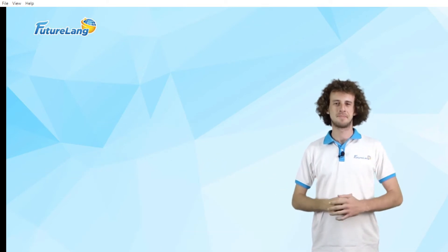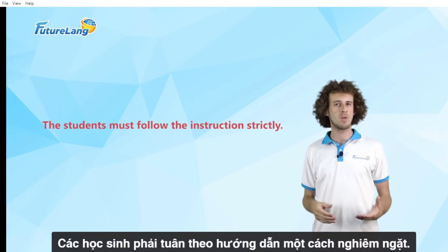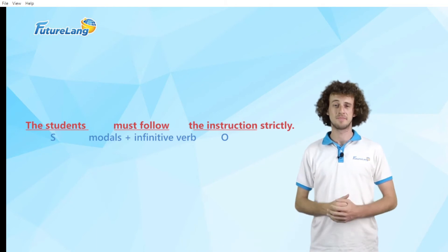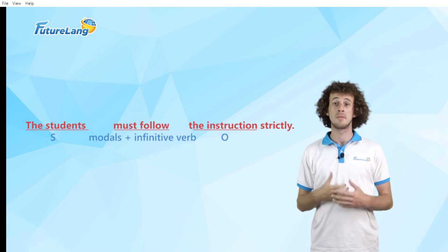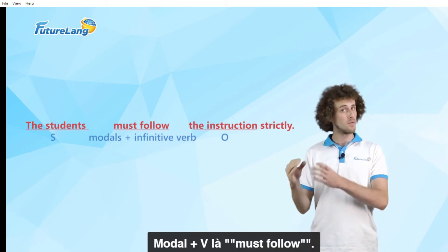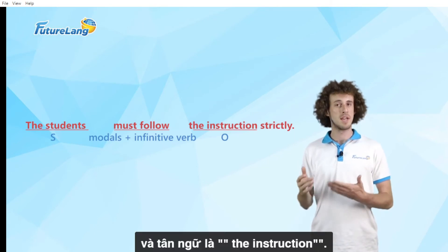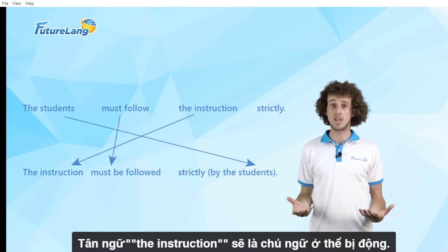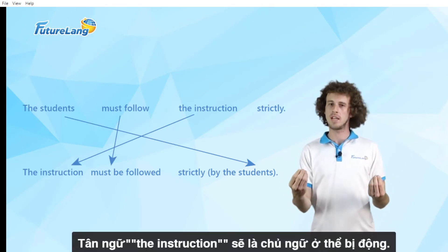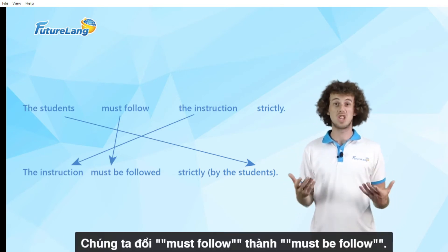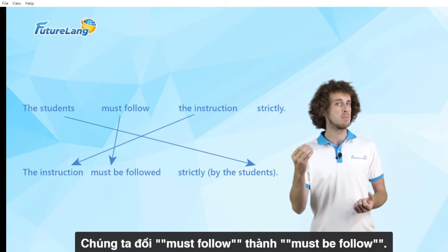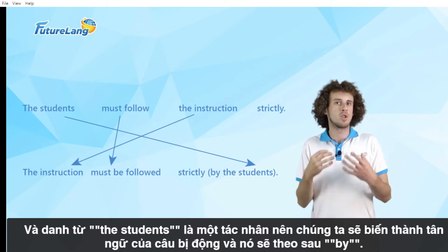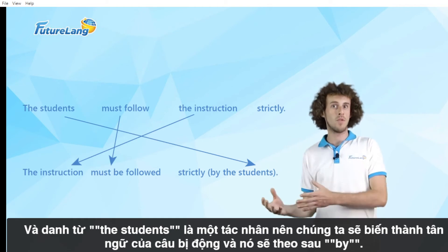Let's look at an example sentence. In this active sentence, the students are the subject. 'Must follow' is the modal plus verb, and 'the instruction' is the object. Now, let's convert this into the passive voice. The object, 'the instruction', will be the subject in the passive voice. We change 'must follow' to 'must be followed'. And the noun, 'the students', is the agent, so we will turn it into the object of the passive sentence, and it will follow 'by'.